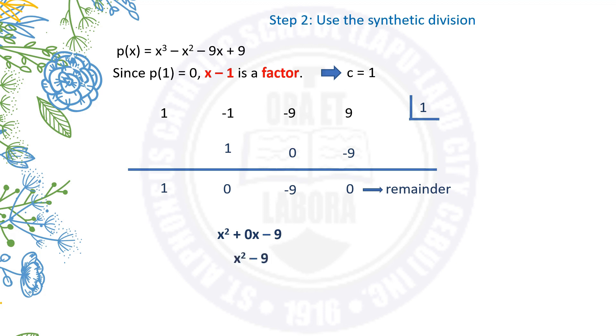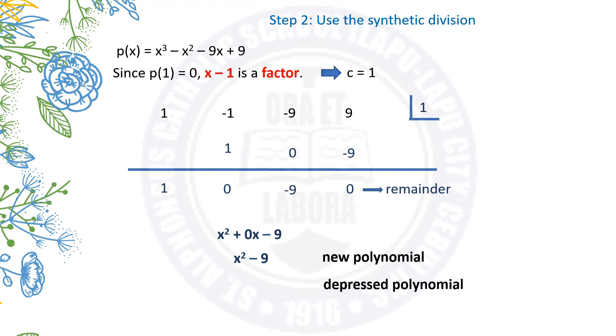The new polynomial, or depressed polynomial, has coefficients 1, 0, and negative 9, which simplifies to x squared minus 9.